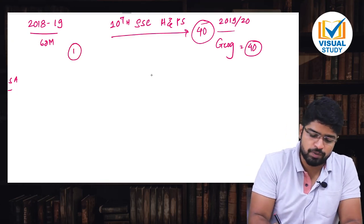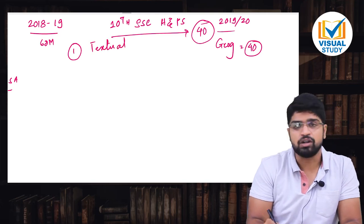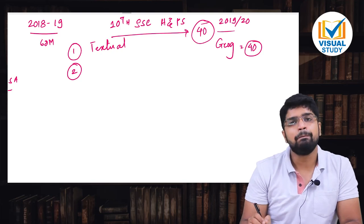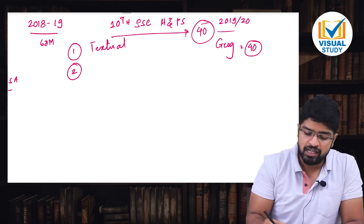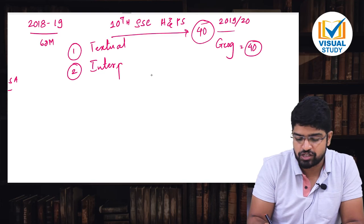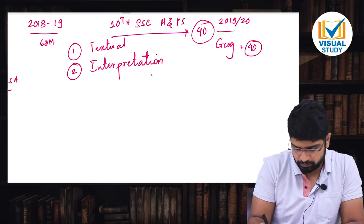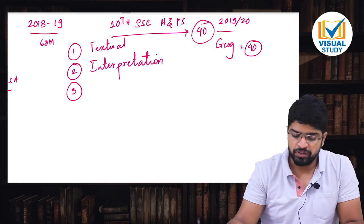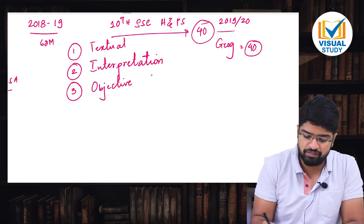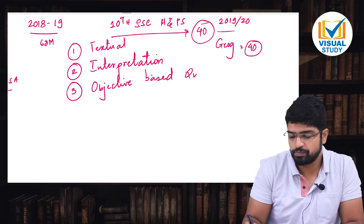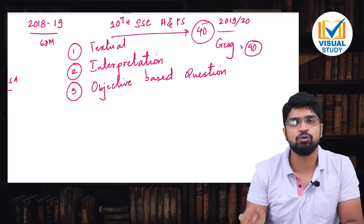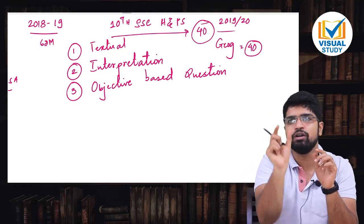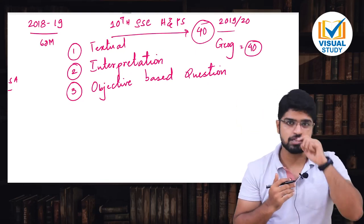History, political science, geography, economics, ye do alag subjects hai. We are not like CBSE jahan pe ek poora one subject hai. For us it is quite segregated, it is well organized, it is well bifurcated. History and political science, a total comes for a 40 marks paper. Number one, of course paper is going to be based on textual parts. There is nothing going to be which will come outside the textbook. Number second, it is going to be a paper which is based on interpretations. Number third, along with the interpretation based paper, this paper will be having more of objective based questions.